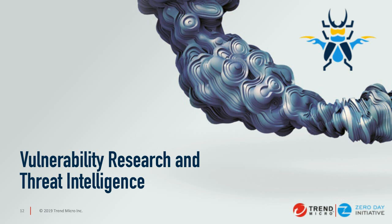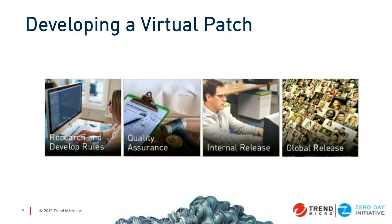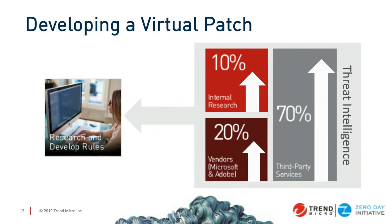One big thing I want to talk about today is threat intelligence, because there are a lot of companies that say they do threat intelligence but are very nebulous about what that means. When I say ZDI does threat intelligence, what does that mean? It starts with the virtual patch. There are many organizations that develop a virtual patch, IDS signature, or IPS signature — it really comes down to four areas: R&D, QA, internal release, and global release. It's in the research and development that we get this nebulous thing called threat intelligence. For most companies, 70% is through third-party services, 10% is through internal research, and 20% is industry partnerships.